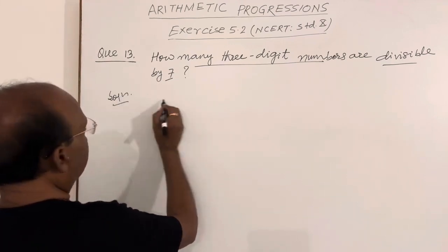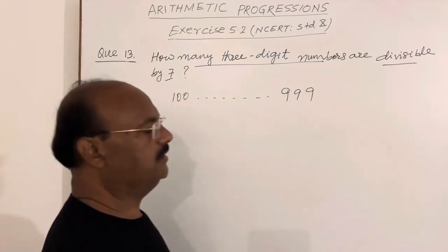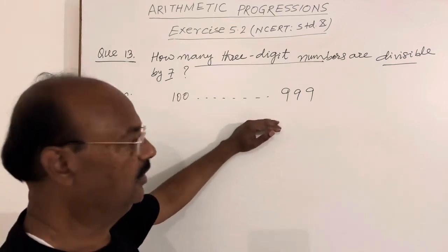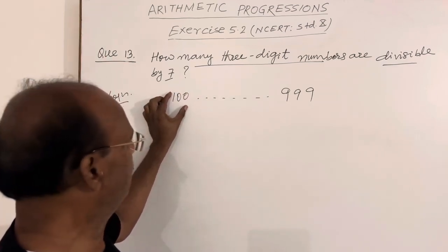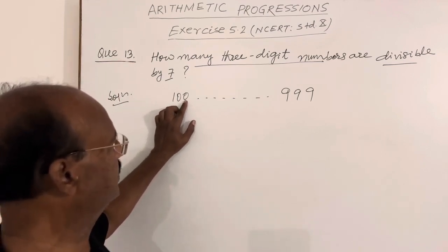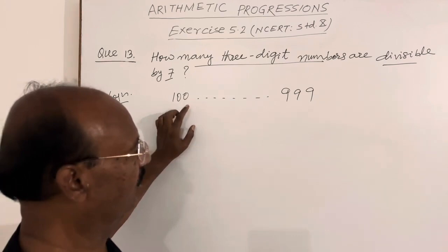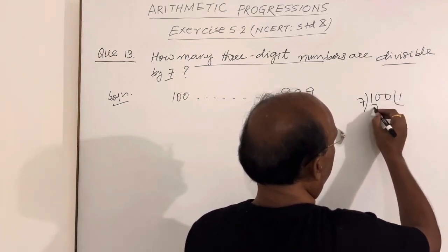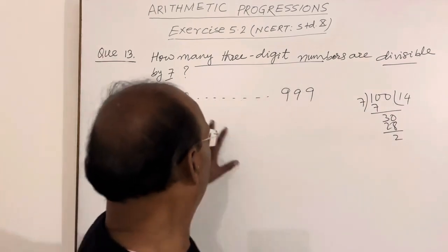Three-digit numbers start from 100 and end at 999, but we have to find out only those three-digit numbers which are divisible by 7. Naturally, 100 is not divisible by 7 because whenever we divide 100 by 7, 7 times 1 is 7, this is 30, 7 times 4 is 28, with remainder 2, so not divisible.